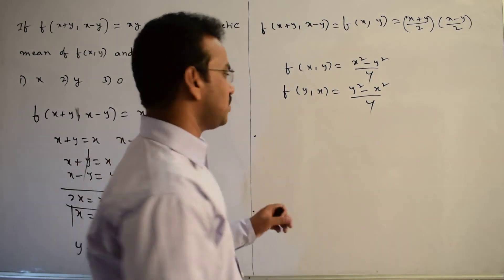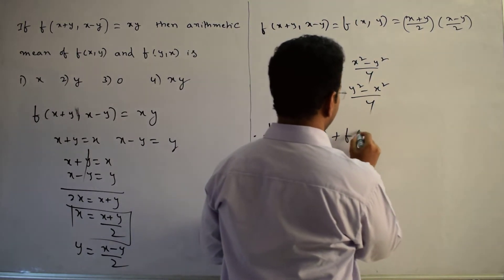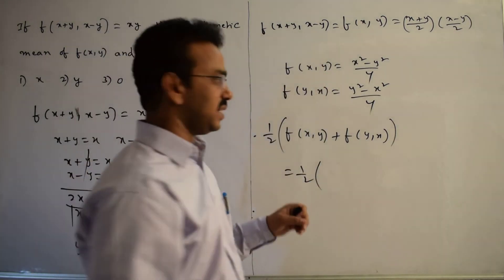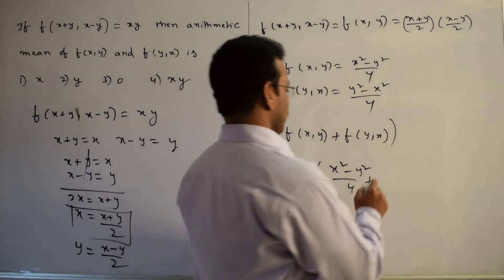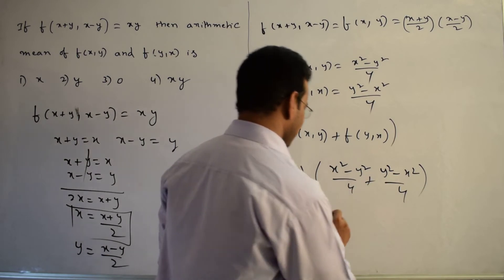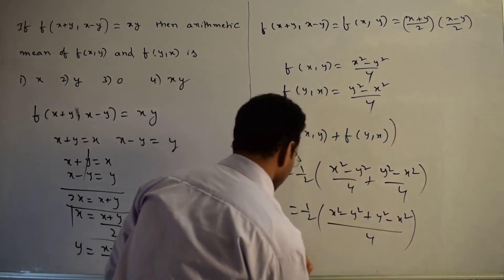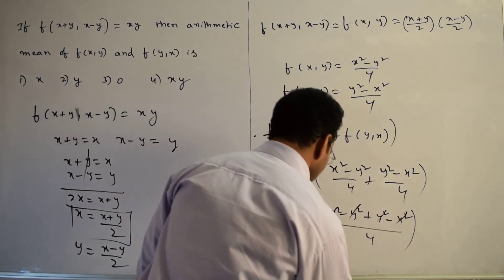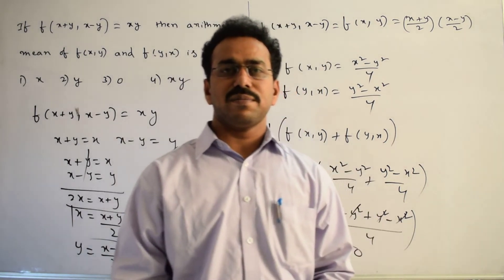Now we calculate the arithmetic mean of these two: (1/2) × [f(x,y) + f(y,x)] = (1/2) × [(x²-y²)/4 + (y²-x²)/4]. The y² terms cancel and the x² terms cancel, giving (1/2) × 0 = 0. So the arithmetic mean equals 0.